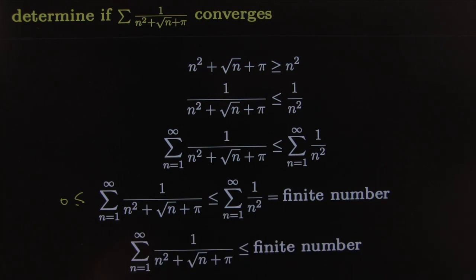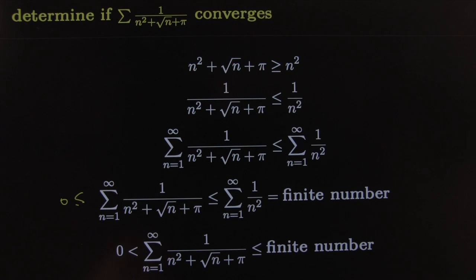Therefore this one less than or equal to some finite number and it's positive and then we're done. We say that this one converges by direct comparison test.